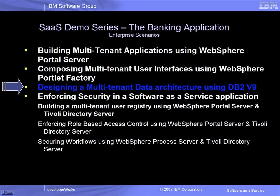Designing a multi-tenant data architecture requires a decision on the degree of data isolation among tenants. A SaaS data architecture can range from isolated tenant databases to shared databases and even shared database schema. This demo focuses on a shared schema architecture and will show how the XML capabilities of DB2v9 simplify tenant data configuration in this type of environment.